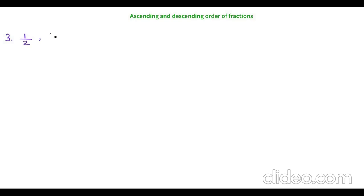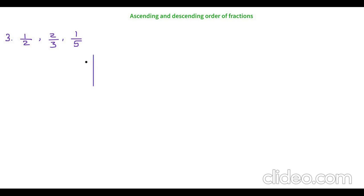Here is another question which is a little different. We have: 1 by 2, 2 by 3, 1 by 5. Here neither the numerators are the same nor the denominators are the same, so these are unlike fractions. Whenever we get this type of fraction, we have to find the LCM. I have already explained 3 methods to find an LCM — the factor tree method, the prime factorization method, and the listing method. The link will be given in the description.